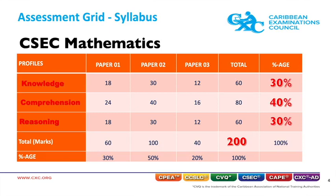For the purpose of grading, the paper contribution is not as important as the profile contribution, since CXC grades on profiles and not on paper.